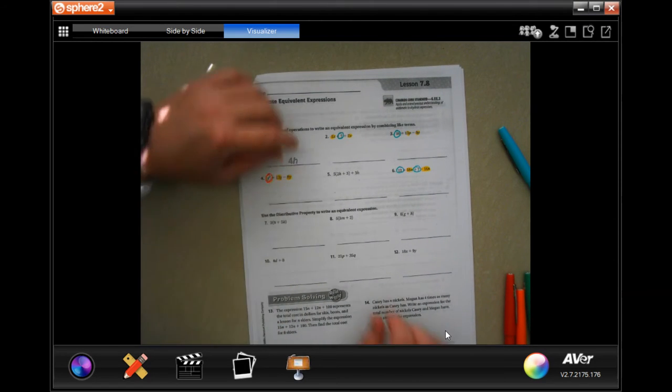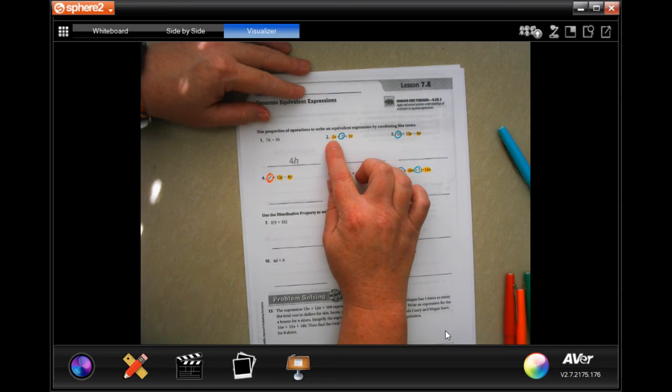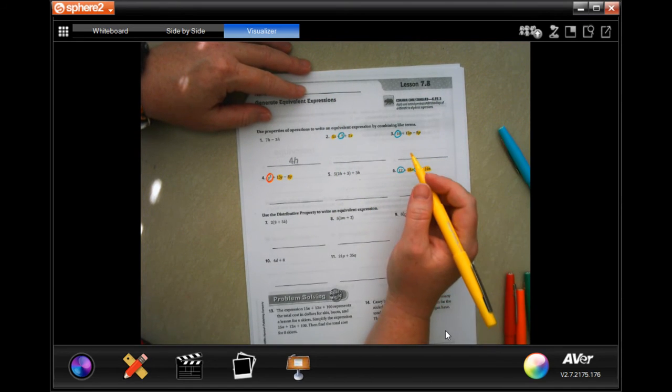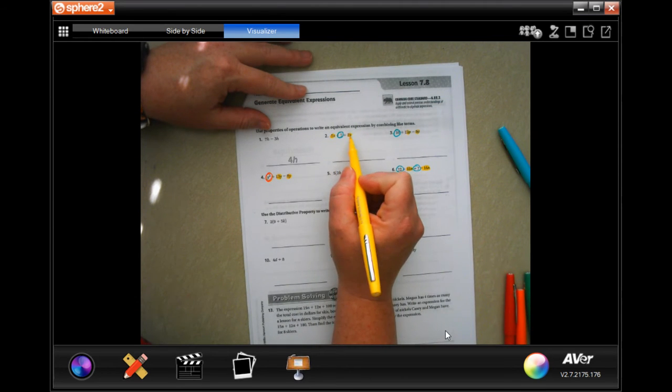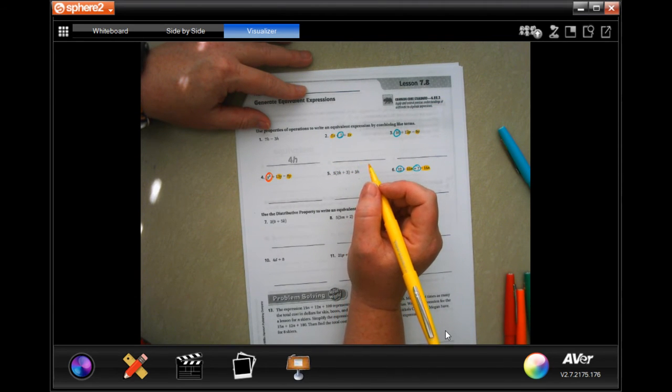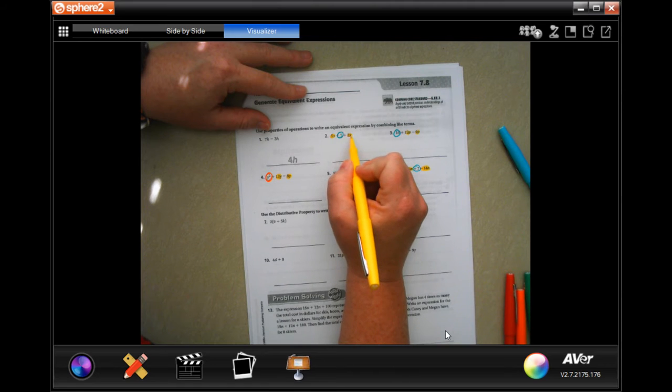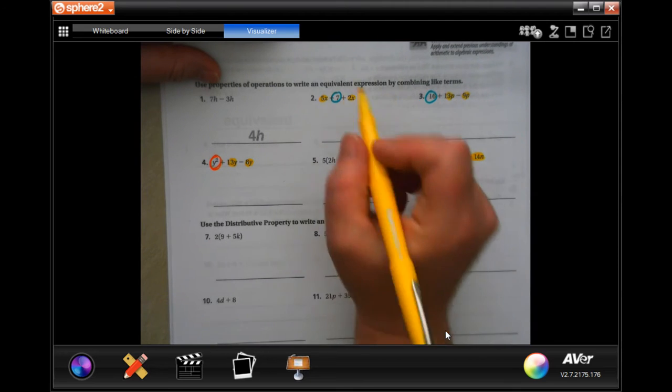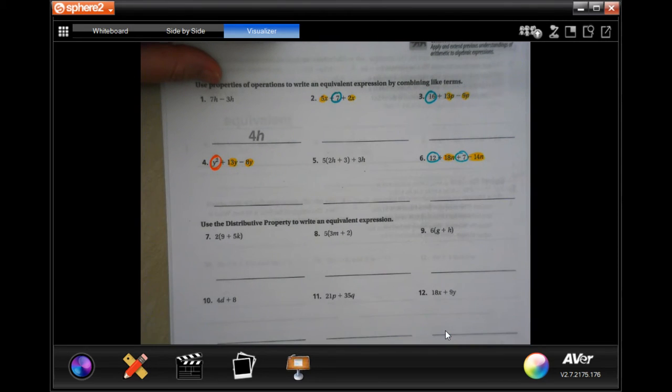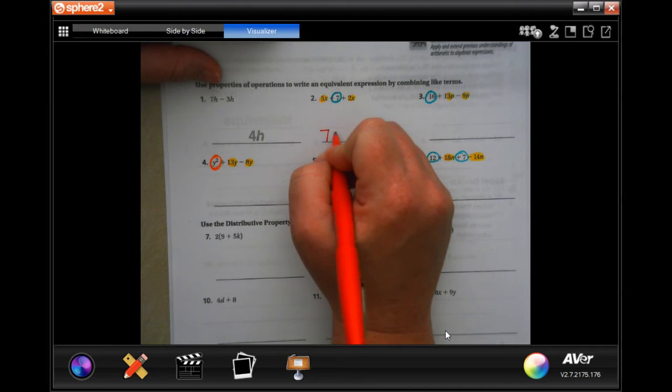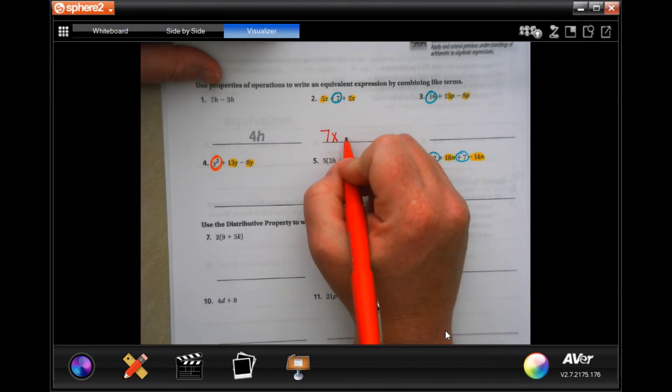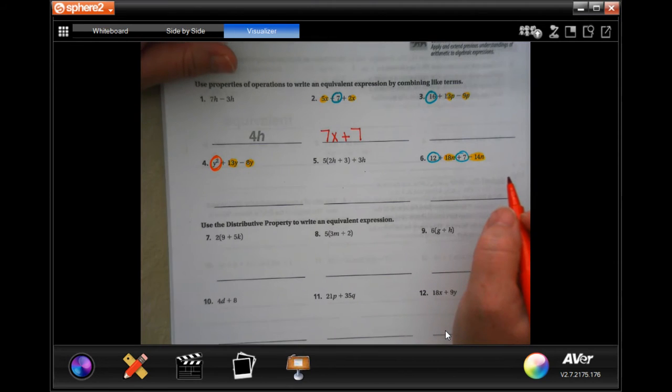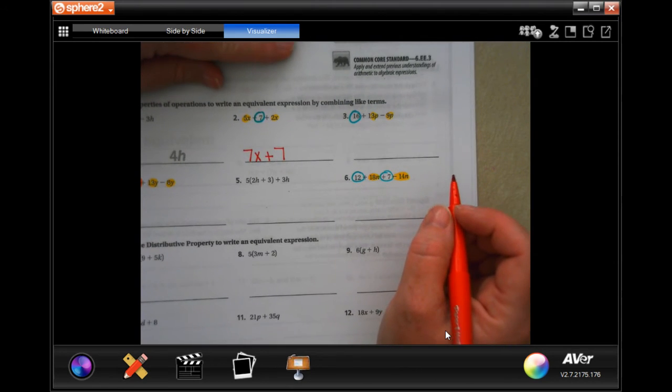So you'll notice that I went through and I just used just a light marker. You can use a highlighter, colored pencil, whatever you need. And I just highlighted my like terms. This one has an x and this one has an x. I'm going to zoom in a little bit so y'all can see a little bit better. So 5x and 2x, you just add those together for 7x. We still are adding the other 7 there. So 7x plus 7. That's it, don't need to do any more.